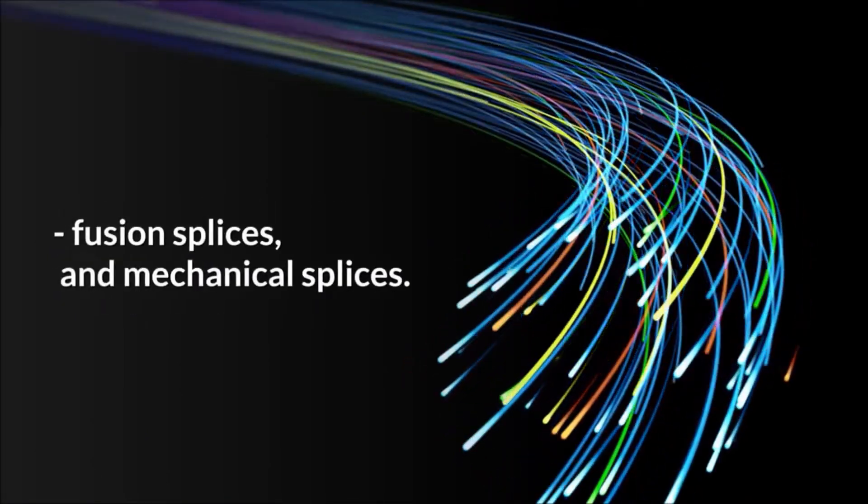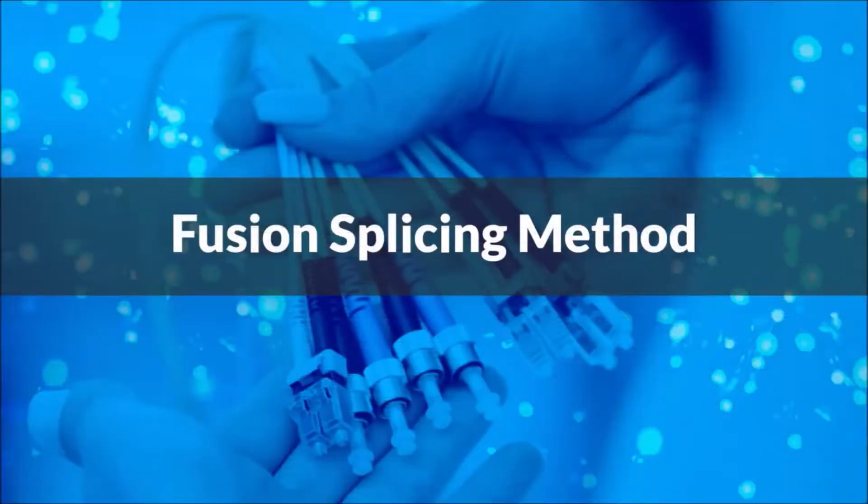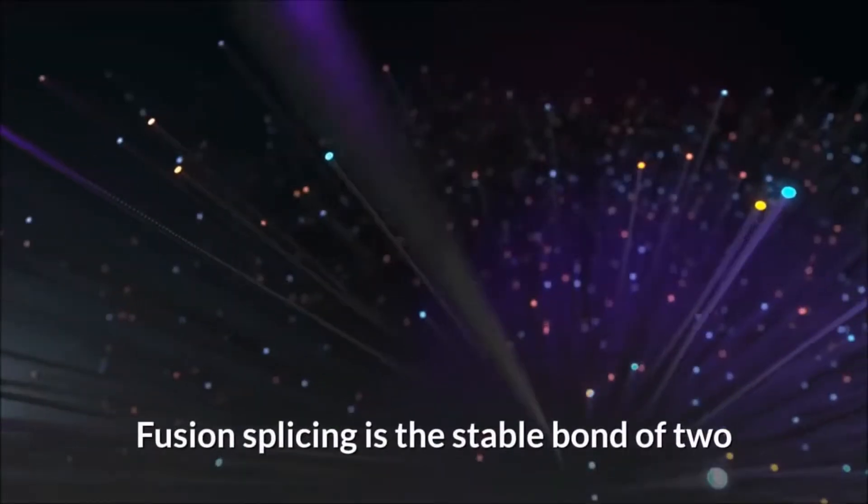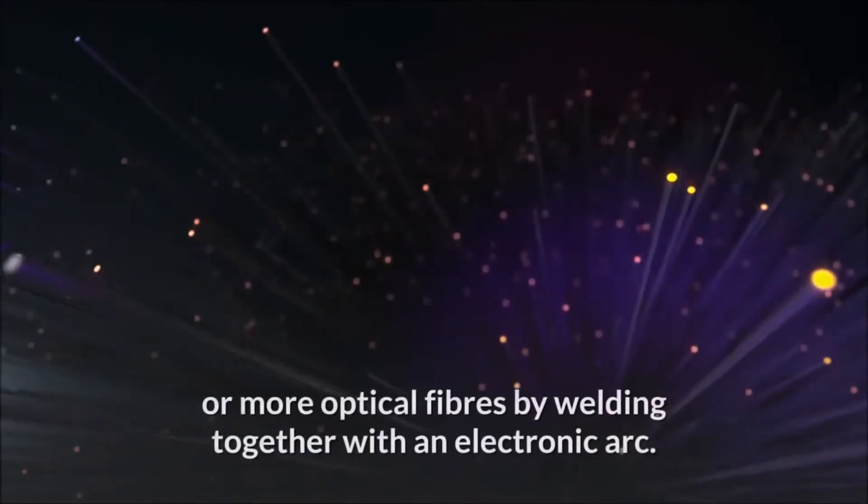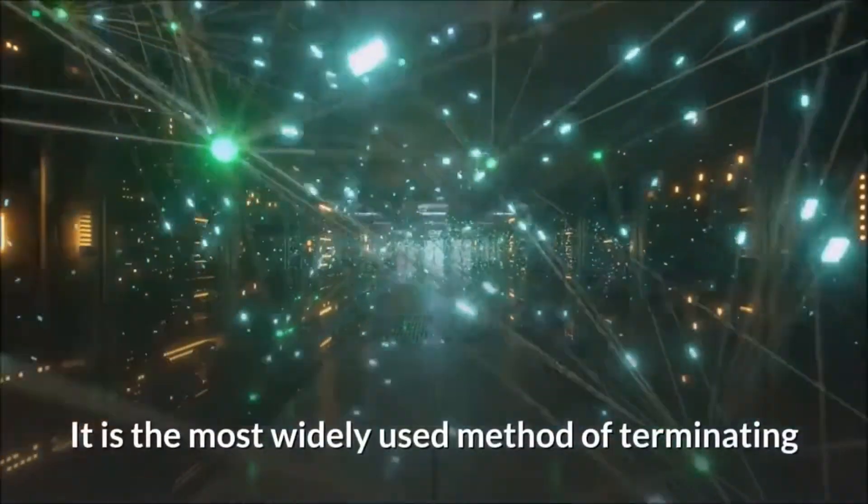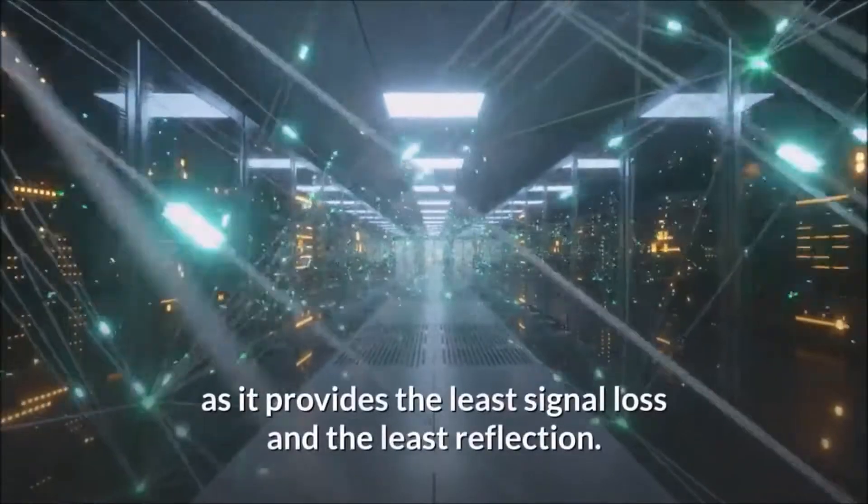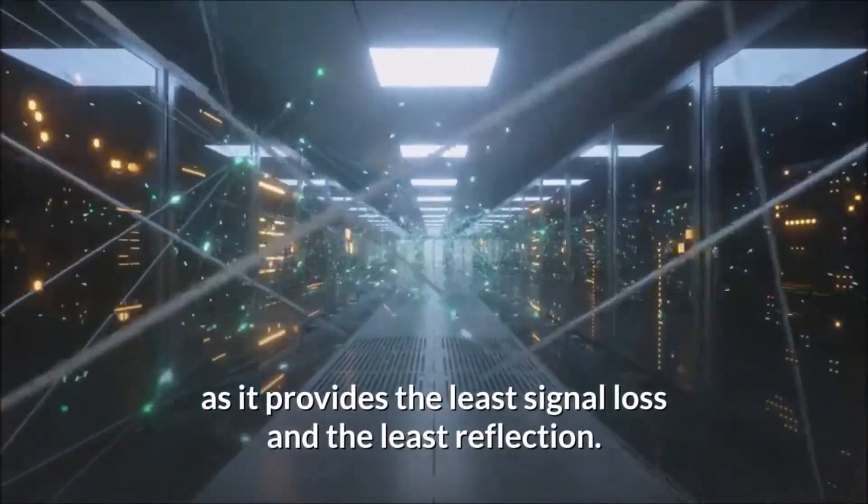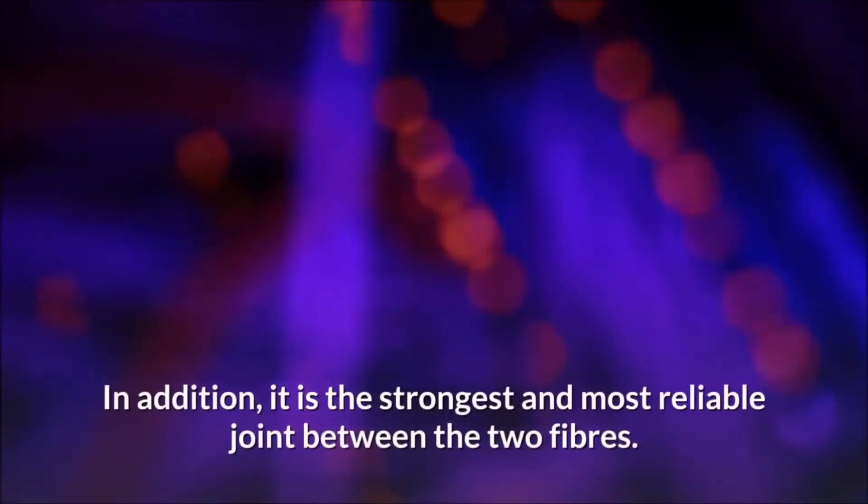Fusion splicing method. Fusion splicing is the stable bond of two or more optical fibers by welding together with an electronic arc. It is the most widely used method of terminating as it provides the least signal loss and the least reflection. In addition, it is the strongest and most reliable joint between the two fibers.